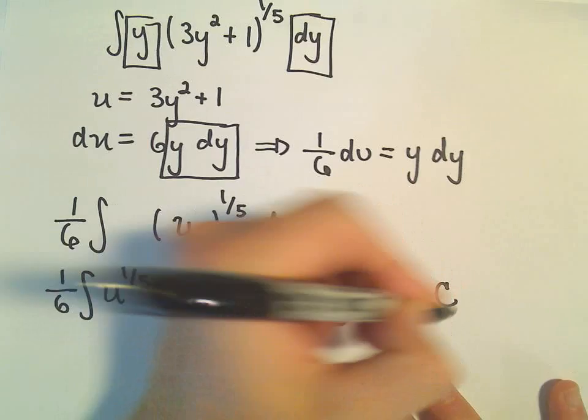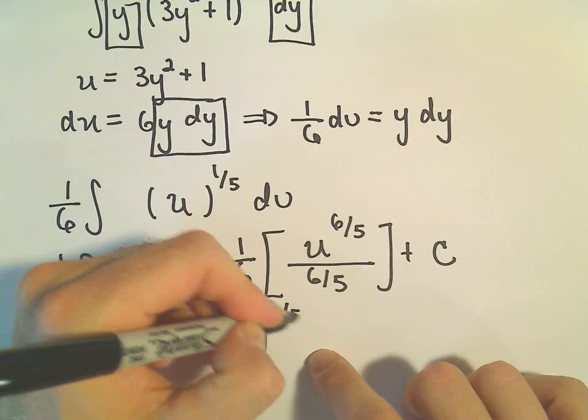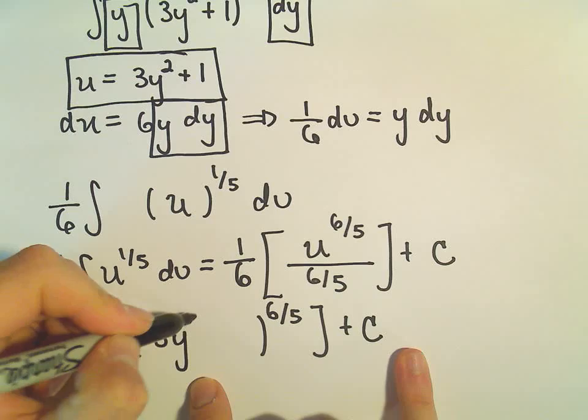Well, okay, so dividing by 6 over 5 is the same thing as multiplying by 5 over 6. And then we still have our u to the 6 over 5 power plus c. But again, now I'm going to replace my u with our original substitution.